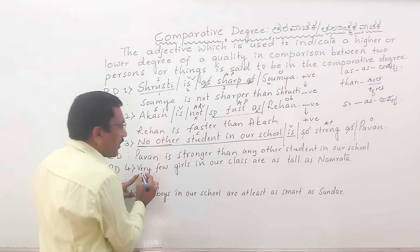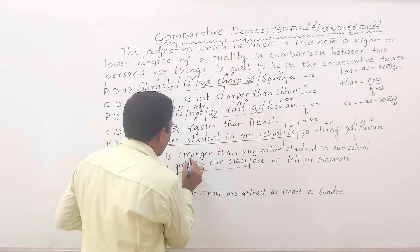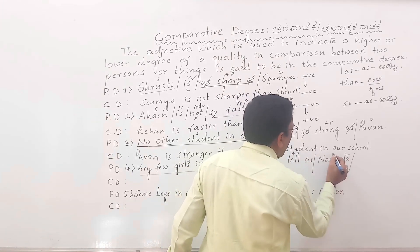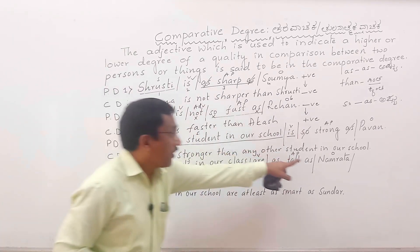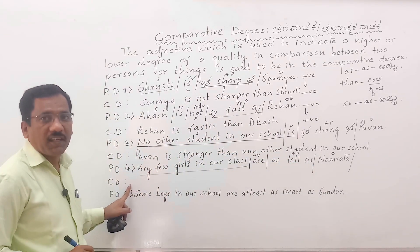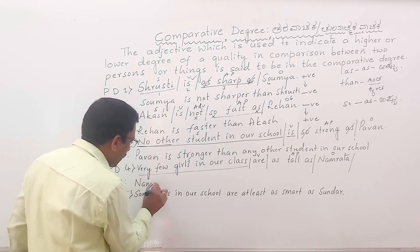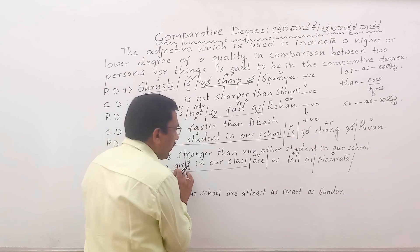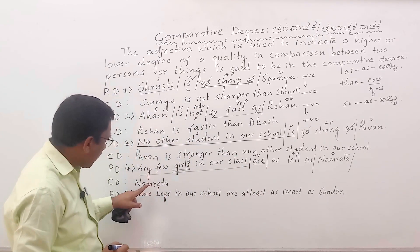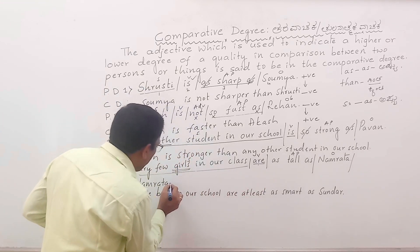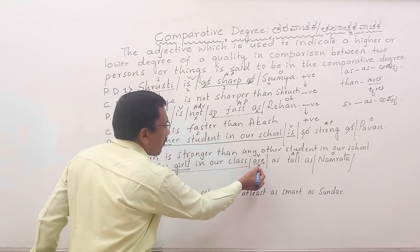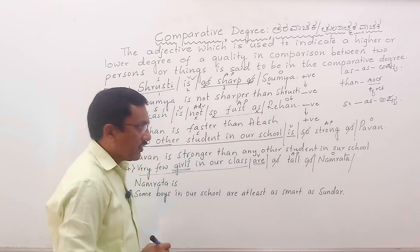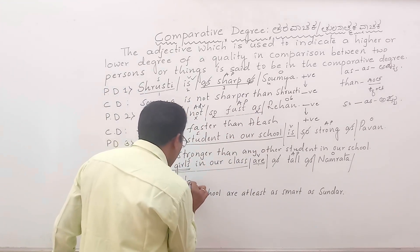Next example: Very few girls in our class are as tall as Namrata. Here, 'very few girls in our class' is the subject, 'are' is the verb, 'as tall as' is the adjective part, and Namrata is the object. The object comes first in comparative degree — Namrata. Namrata is singular and girls is plural, so 'are' is used in the positive degree, but since our new subject Namrata is singular, we use 'is'. 'As...as' are cancelled and 'tall' becomes 'taller' — so: Namrata is taller.